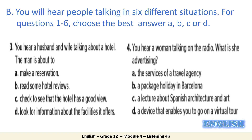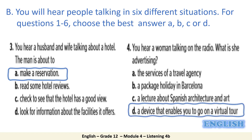Now let's move to question number three: you hear a husband and wife talking about a hotel — the man is about to do what? In the audio, the woman seems to be worried as her previous stay in the hotel wasn't that good, but the man isn't worried at all. The answer is: make a reservation. Next, you hear a woman talking on the radio — what is she advertising? The woman is talking about a virtual tour, and in order to enjoy your tour you need a device that enables you to go on a virtual tour. The answer is D.